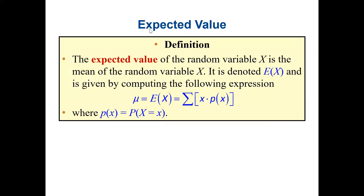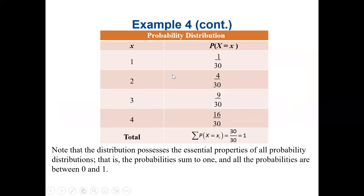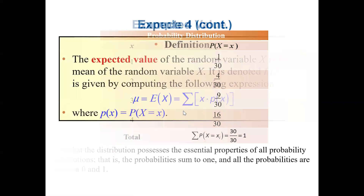The expected value of the random variable X is the mean of X, denoted E(X). The formula is mu equals E(X) equals the sum of each X value times its probability. For the previous example, E(X) = 1×(1/30) + 2×(4/30) + 3×(9/30) + 4×(16/30).